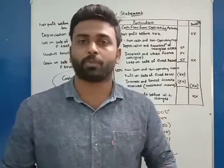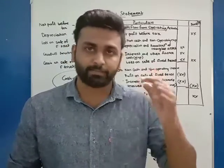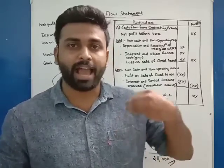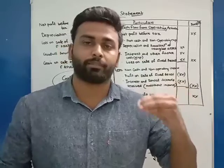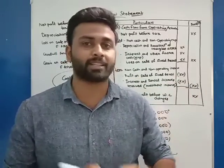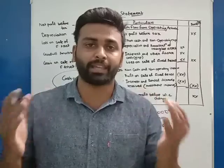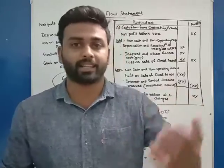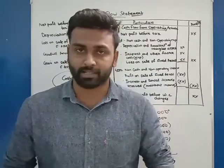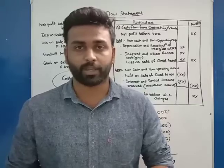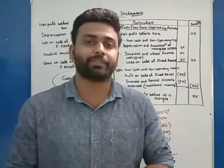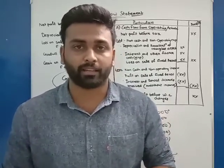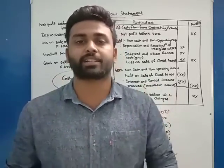When we prepare the cash flow from operating activity, the concept you have to make clear is that we will show the inflow and outflow of cash from operating activities. Operating activity means the main business — the main activity of the business. For example, if I am a furniture dealer, the buying and selling of furniture is the main business, and that is the operation. In this activity, we will identify the inflows and outflows and find the net cash from operations.